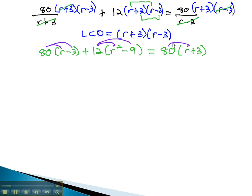Distributing through the parentheses will give us 80r minus 240, plus 12r squared, minus 108, equals 80r plus 240.